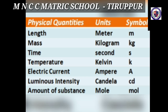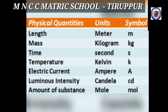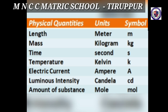There are seven fundamental physical quantities in SI units. The fundamental quantities and their units are: length, mass, time, electric current, temperature, amount of substance, and luminous intensity. The unit of length is meter (symbol: m). The unit of mass is kilogram (symbol: kg). The unit of time is second (symbol: s).